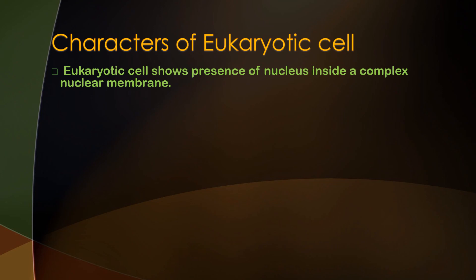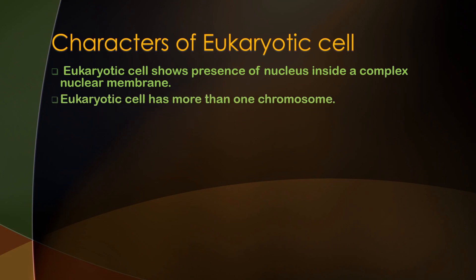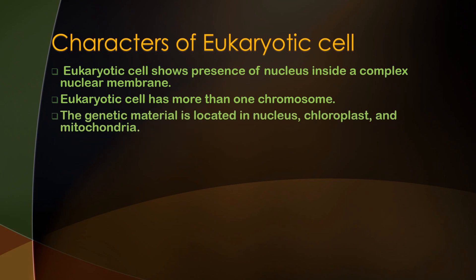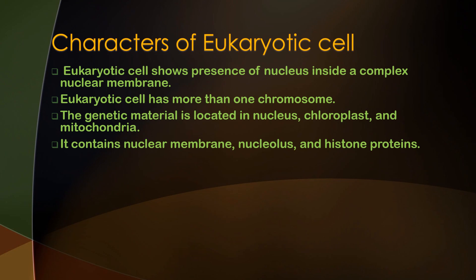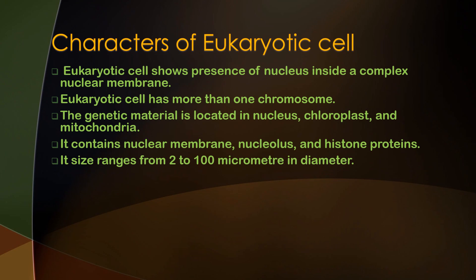This is the important distinguishing character between prokaryotic and eukaryotic cells. The eukaryotic cell has more than one chromosome; the genetic material is located in the nucleus, chloroplasts, and mitochondria. It contains a nuclear membrane, nucleolus, and histone proteins. The size of the eukaryotic cell ranges from 2 to 100 micrometers in diameter.